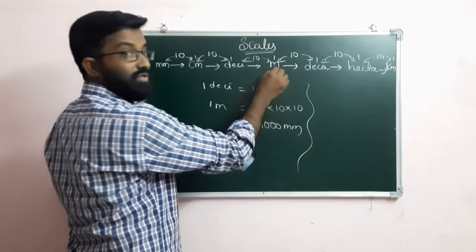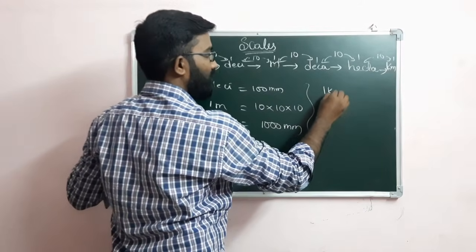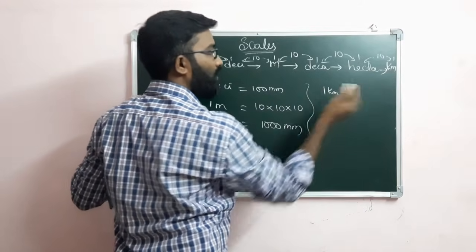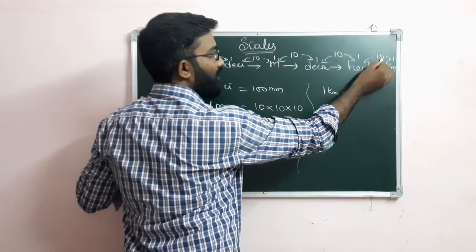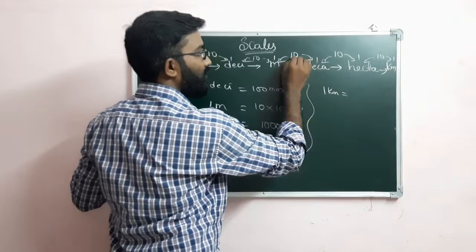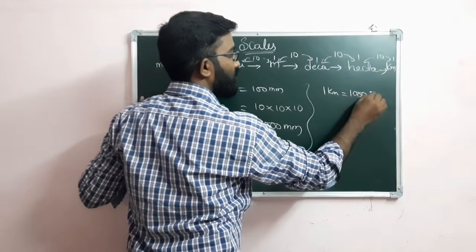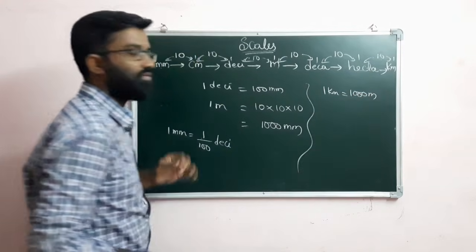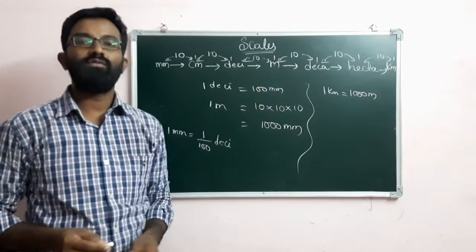Kilometer to meter: 1 km equals 10 into 10 into 10, which is 1000. So 1000 meters equals 1 kilometer.